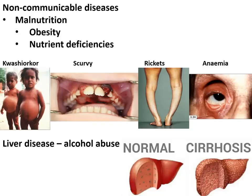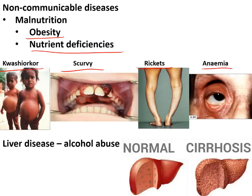Non-communicable diseases include malnutrition — getting too much or too little of certain nutrients. Examples include obesity from too much fat and sugar, and nutrient deficiencies such as kwashiorkor (lack of protein), scurvy (lack of vitamin C), rickets (lack of vitamin D), and anaemia (lack of iron).